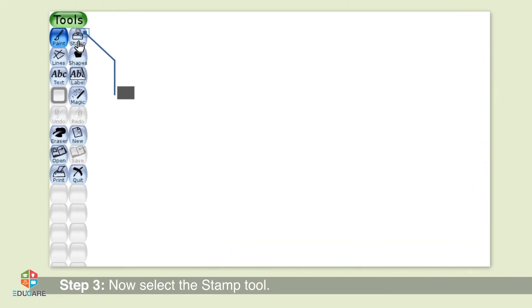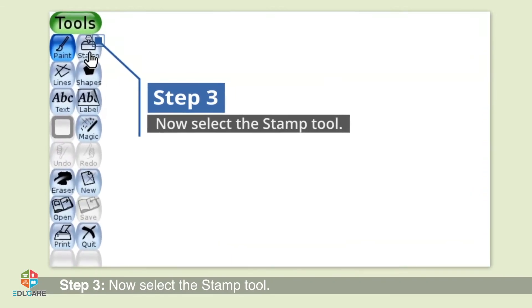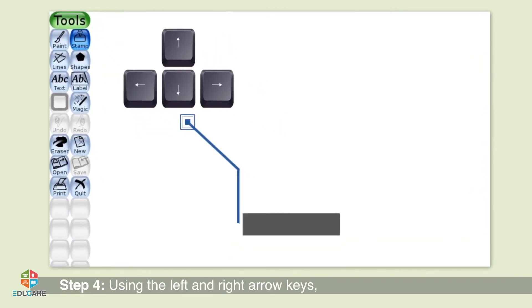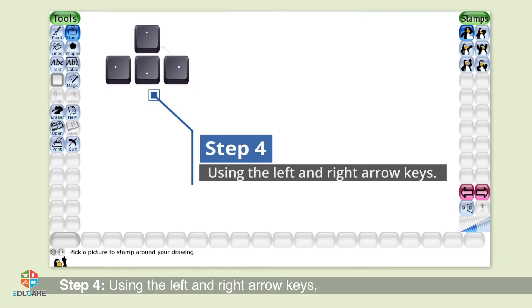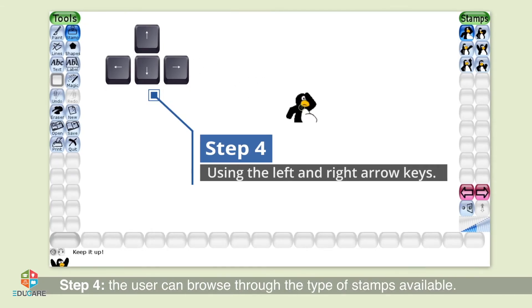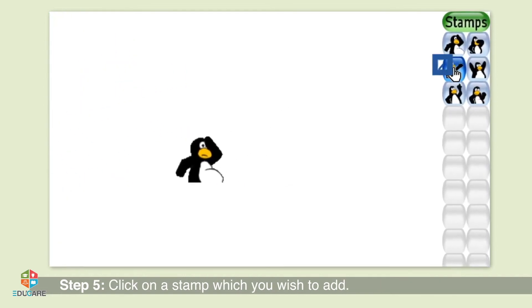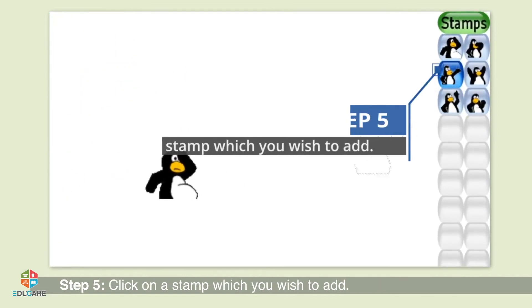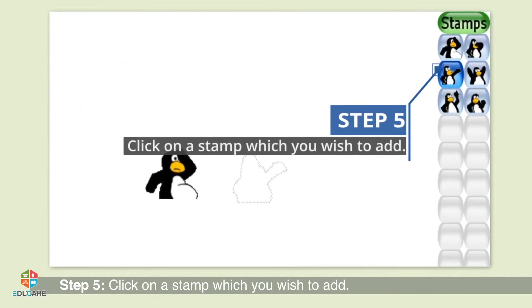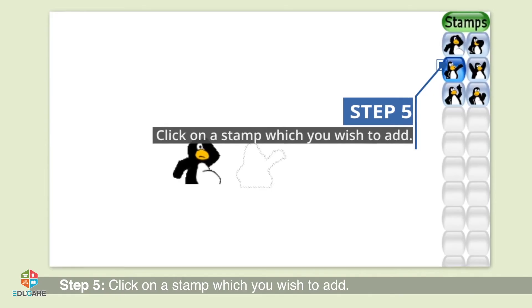Step 3: Now select the stamp tool. Step 4: Using the left and right arrow keys, the user can browse through the types of stamps available. Step 5: Click on a stamp which you wish to add.